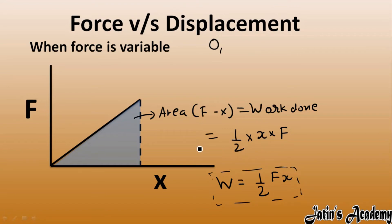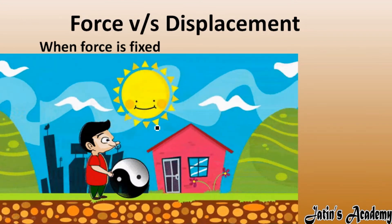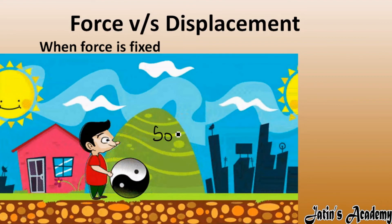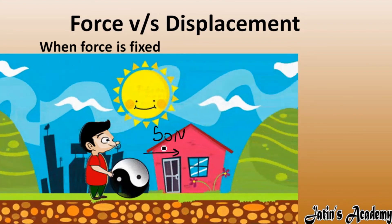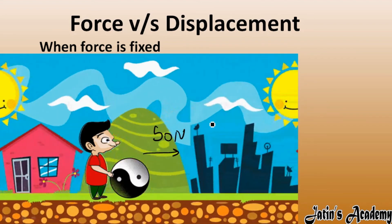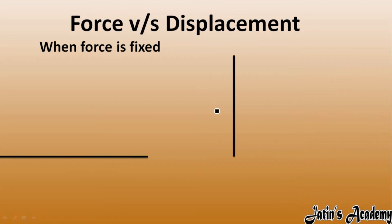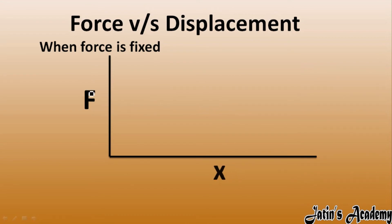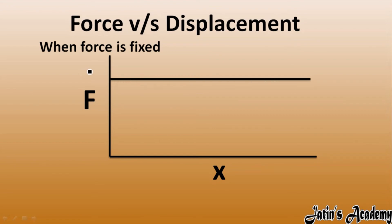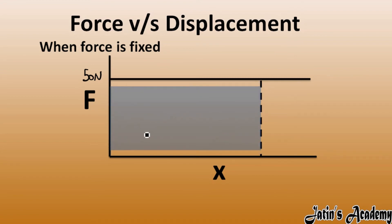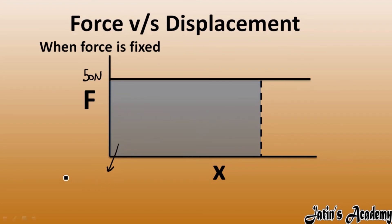When force is fixed — for example, 50 Newton force is applied on a body and 50 Newton remains constant — force is fixed and displacement is increasing. On the graph, force is on the y-axis and displacement on the x-axis. Since force value is fixed at, say, 50 Newton and displacement keeps increasing, the area we take here is basically a rectangle.